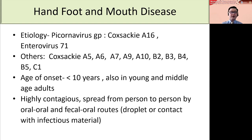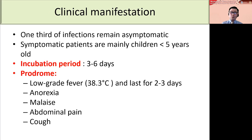The age of onset for hand, foot, and mouth disease is typically less than 10 years old, but it can also occur in young and middle-aged adults. It is highly contagious and can spread person-to-person by oral-to-oral and fecal-to-oral routes via air droplets or contact with infectious material. Many patients remain asymptomatic, and symptomatic patients are mainly children less than five years old. It has an incubation period of three to six days — much shorter than monkeypox and chickenpox. It begins with prodromal symptoms such as low-grade fever lasting two to three days, associated with anorexia, malaise, abdominal pain, and cough.